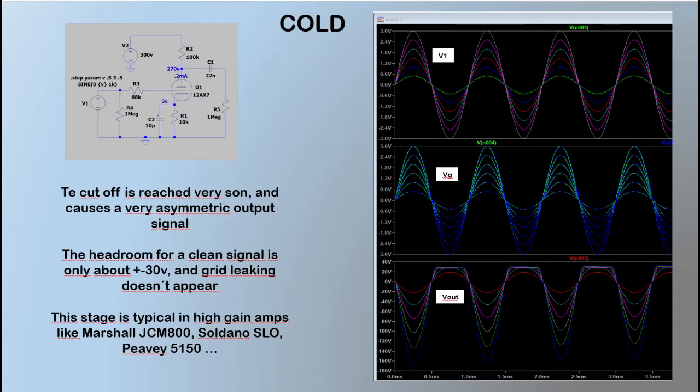We see in the SPICE simulation the schematic R1 of 10k and the current through the tube is very very low - 0.2 milliamps. The tube is very near to cutoff. The output signal is severely clipped as we can see in the output figure. The distortion of this stage is very asymmetric and is very used in high gain amps. It's a rock sound. Guitar amps like Marshall JCM, Soldano SLO, Peavey 5150, Orange and Mesa all have this stage.